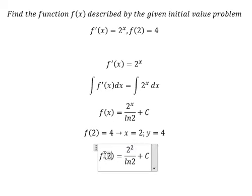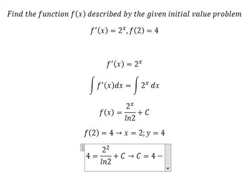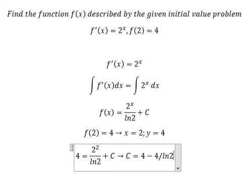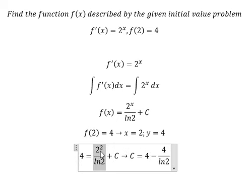So this one, you call it 4, and we call C equals to 4 minus 4 over ln 2. We put this one to the left, that's why you call it 4 minus 4 over ln 2.